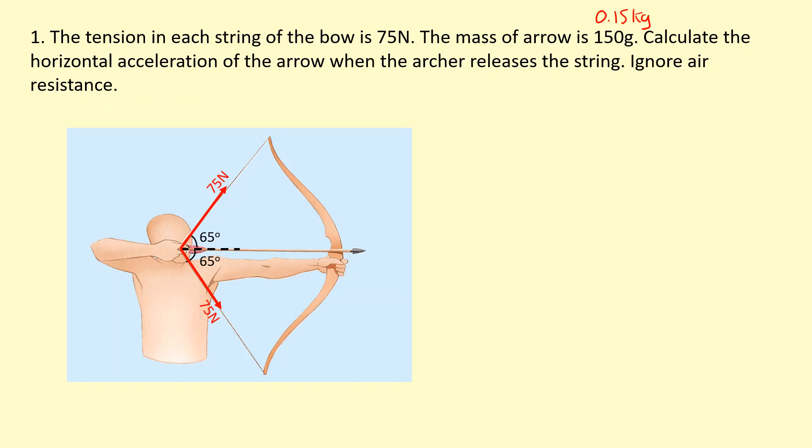Ignore air resistance. We're not interested in the vertical components because we know they're going to cancel out. We're only interested in the horizontal motion. Both strings will provide a horizontal component, 75 cosine 65, but we're going to have to multiply by 2 because both strings provide that.